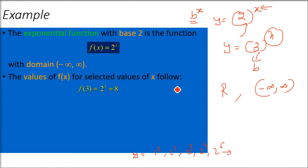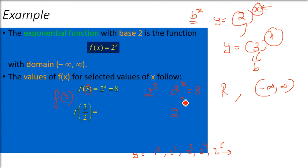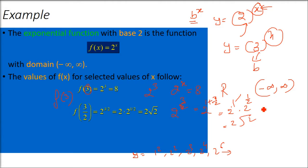Let us take an example. For f(x) = 2^x, find f(3): that is 2 cubed, which is 8. Now take a fraction, say x = 3/2. So 2^(3/2) = 2^(1 + 1/2) = 2^1 times 2^(1/2) = 2 times root 2, which equals 2 root 2, or equivalently root 8. So f(3/2) equals root 8.